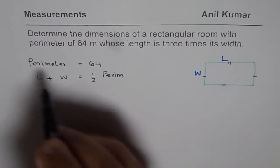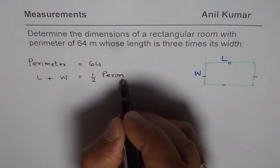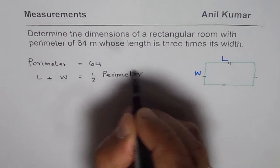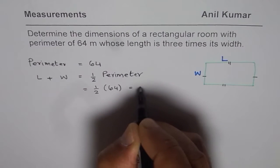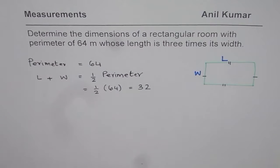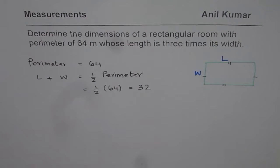Since perimeter is twice length plus width, in our case it is half of 64 which is 32. We get one kind of a condition which says sum of length and width is 32.